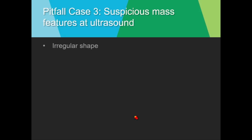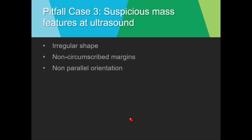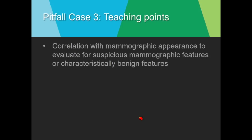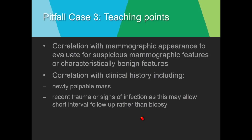Suspicious features at ultrasound include irregular shape, non-circumscribed margins, non-parallel orientation, posterior acoustic shadowing, and associated architectural distortion. It's very important to correlate with mammographic appearance and clinical history — especially with echogenic masses, since hematoma, fat necrosis, or infection can present as an ill-defined echogenic area. In the appropriate clinical scenario, you can safely follow these lesions to make sure they resolve.